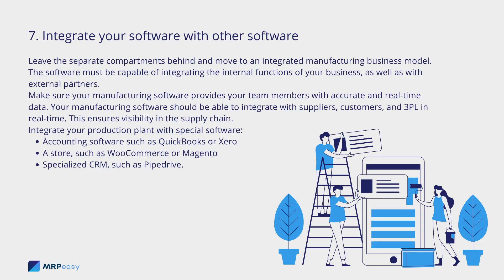Seven: integrate your software with other software. Leave the separate compartments behind and move to an integrated manufacturing business model. The software must be capable of integrating the internal functions of your business as well as with external partners. Make sure your manufacturing software provides your team members with accurate and real-time data, and integrates with suppliers, customers, and 3PL in real time — ensuring visibility in the supply chain. Integrate your production plant with specialized software such as accounting tools like QuickBooks or Xero, a store like WooCommerce or Magento, or a specialized CRM like Pipedrive.